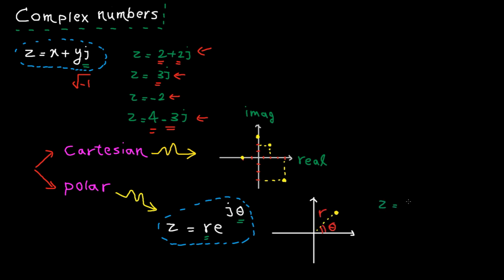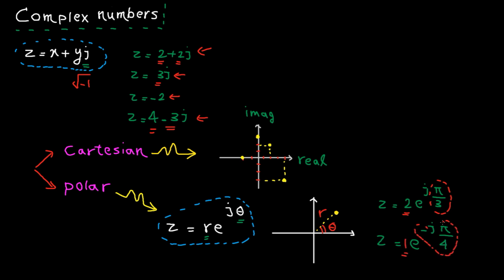For example, 2 e to the power of j pi divided by 3. Here is the radius and here is the angle. Another example: e to the power of minus j pi divided by 4. The radius is 1 and the angle is minus pi divided by 4.